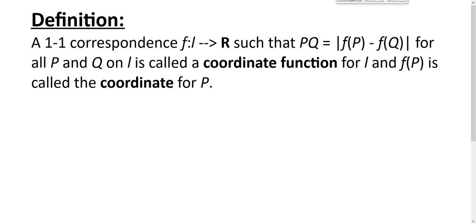Now that we have the ruler postulate in place, now that we have a connection where every line is a number line, let's take a look at what we mean by a coordinate function. A coordinate function is a one-to-one correspondence, a bijection, call it f, from the set of points on a line l to the set of real numbers.